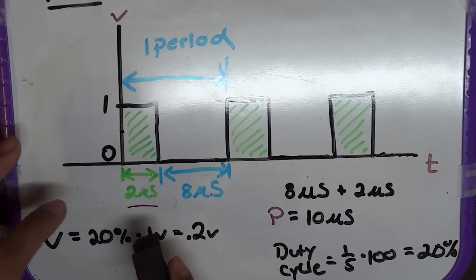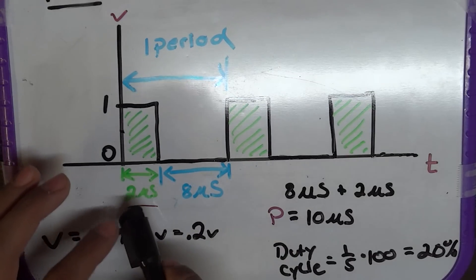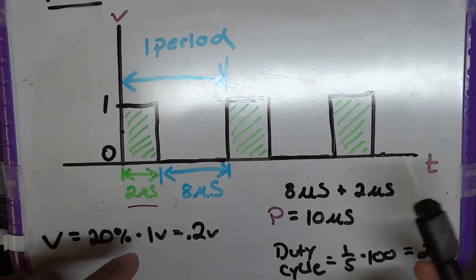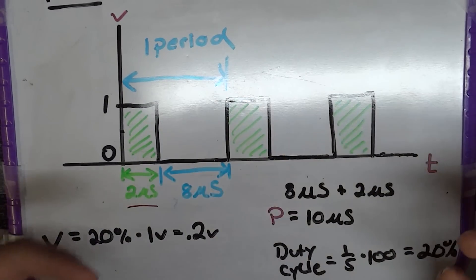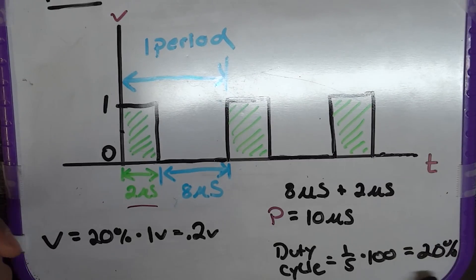Now, to solve for the duty cycle, you have the ratio of the on time to the total time. So, the on time was 2 microseconds and the total time is a period of 10 microseconds. So, 2 over 10 is 1 fifth. And if you make that into a percentage, you have 20%. So, your duty cycle would be 20% in this case.